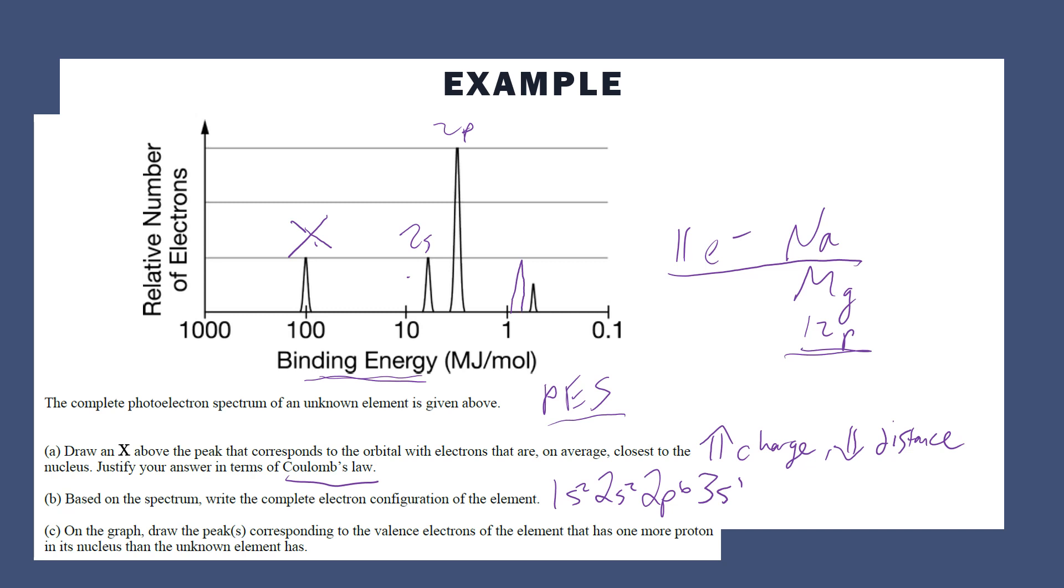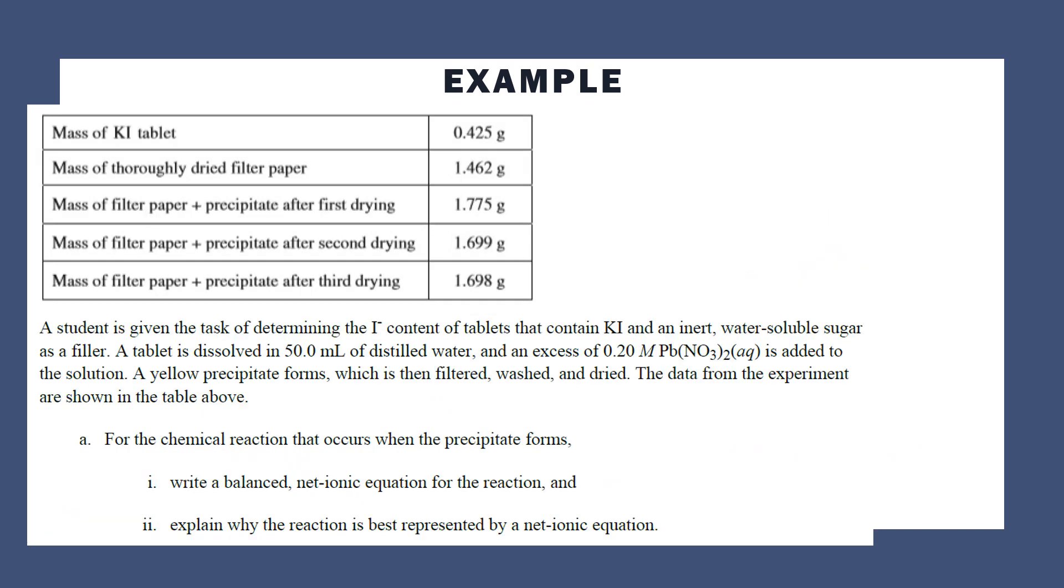So you would actually draw that into the graph. It doesn't have to be perfect. It needs to be larger than 2p but smaller than that original 3s, so it needs to go all the way up to the same height as the 2s. And there you go. That last example was a short free response question, only four points total. This next one is an example from a long free response question. Long free response questions are 10 points total.